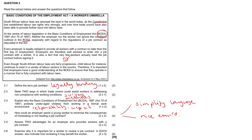Question 2.5: Assess two advantages for an employer who provides workers with a job contract. You minimize incidents of non-compliance by workers that an employer has to deal with, and it sends a clear message to workers of their legal rights. It also helps the employer establish the necessary structure and order in the workplace, thereby reducing possible risks and penalties the employer may incur. In general, it protects the business through policies included in the contract and reduces possibilities of later legal claims — ultimately these companies want to protect themselves.